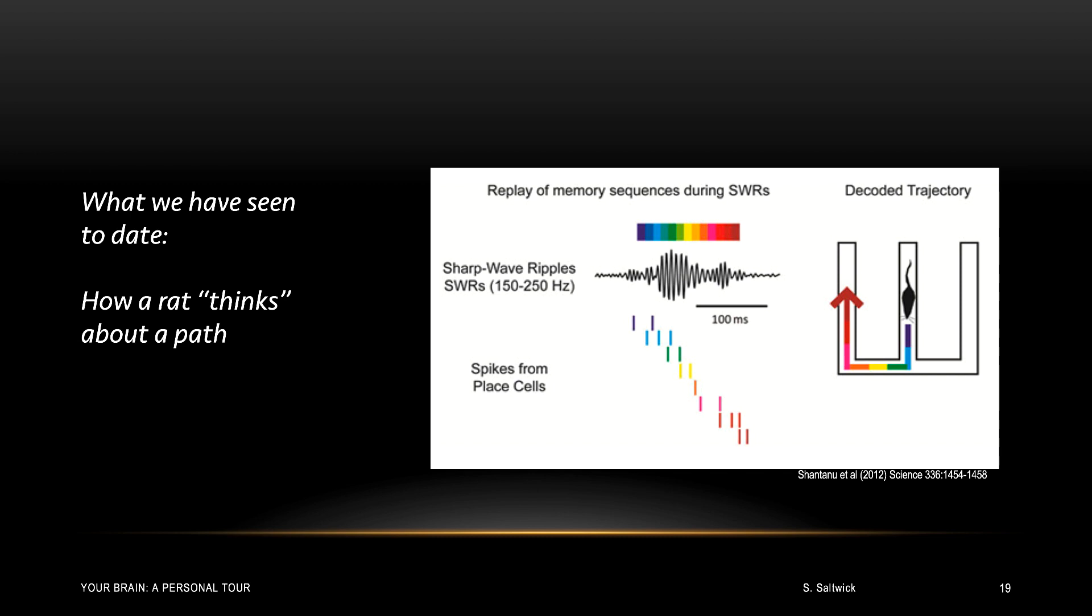But there's another time the place cells fire, sharp wave ripples, or SWRs for short. A sharp wave ripple is a very quick burst of place cells, about a tenth of a second, far too fast for movement. And place cells and those place cells are firing in sequence. So in essence, when a sharp wave ripple occurs, the rat is thinking about a path. He's not moving in that path. This happens much too quickly. The rat is thinking about going on a path. That path can be described by the sequence of place cells as they fire.